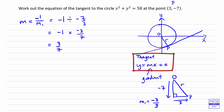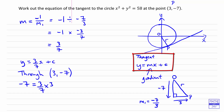So we know the equation we want is y equals three-sevenths x plus c. We know it goes through the point P, which is (3, -7). So we substitute x equals 3 when y equals negative 7, and that gives us c. So minus 7 equals three-sevenths times 3 plus c. Rearranging, c equals minus 7 minus three times three over seven. Putting everything over seven gives us minus 49 minus 9, so c equals minus 58 over 7.